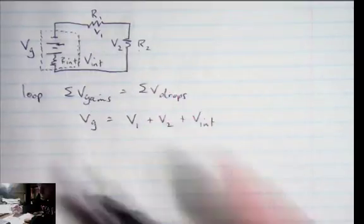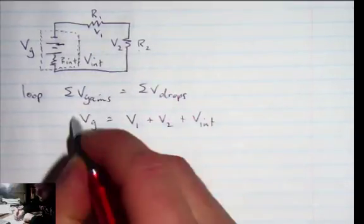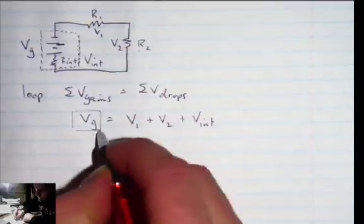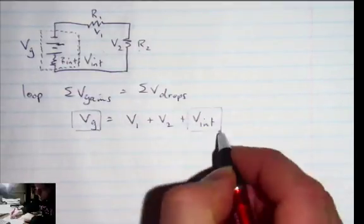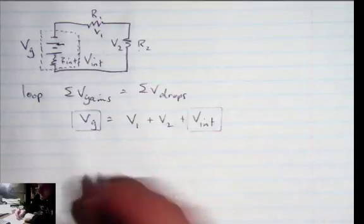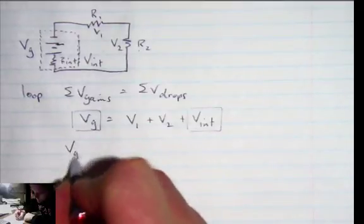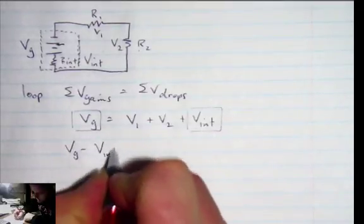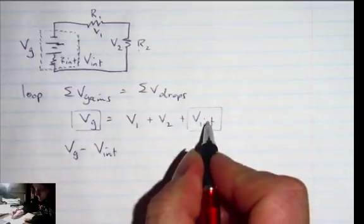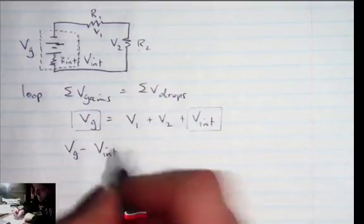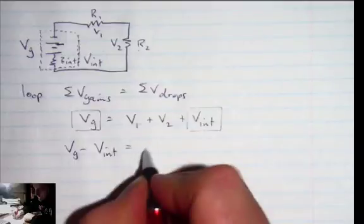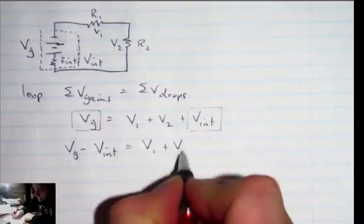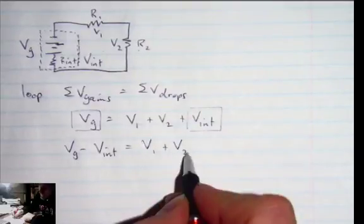So in this loop rule that we have here, this takes place inside the battery and so does this. So if I get those on the same side of the equation, so Vg minus the internal which is a drop, it's even clear that it is a drop by that subtraction, equals the sum of the two other voltages.